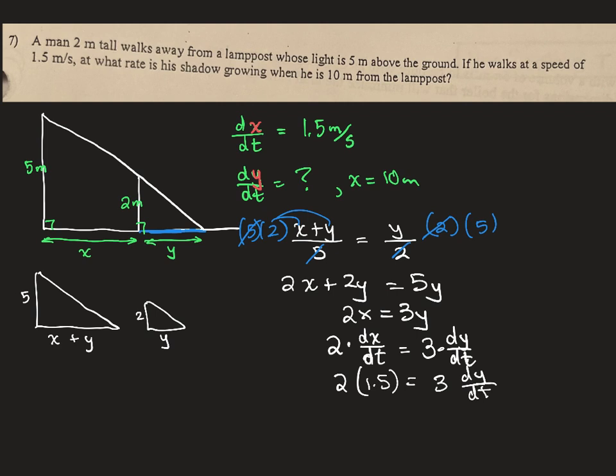Okay, so then we just isolate. 2 times 1.5 is going to be 3, and then we divide by 3. So dy/dt should equal 1. What are the units? Look at the derivative for that. y over t. y is the unit of length. Meters over t time, which is seconds.